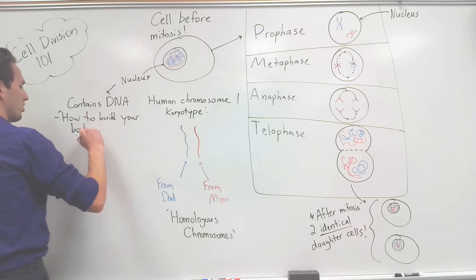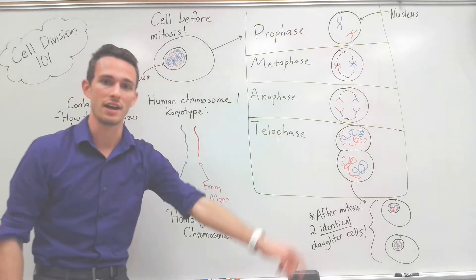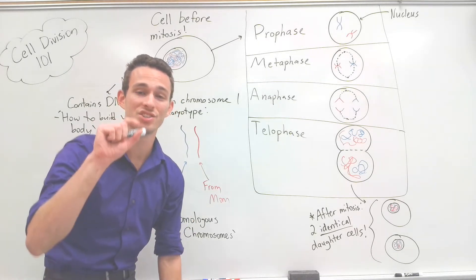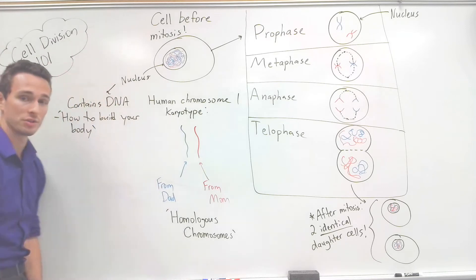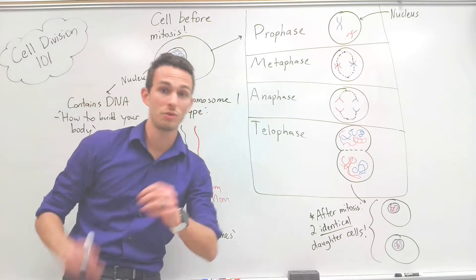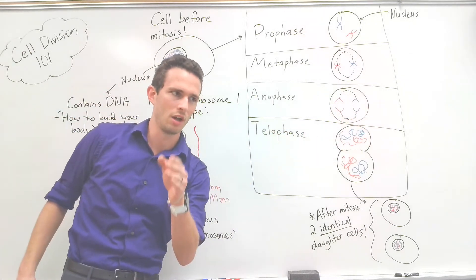All of the instructions on how to build your body are found within this DNA. Fun fact: every cell in your body besides your red blood cells has the exact same DNA on how to build your body. So in other words, every cell in your body has to have the entire instruction manual.